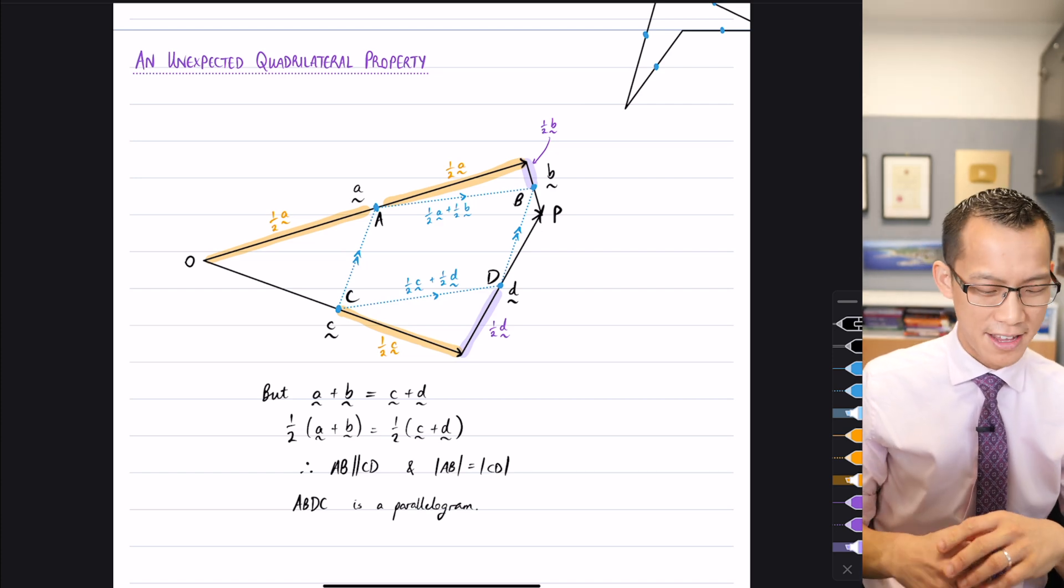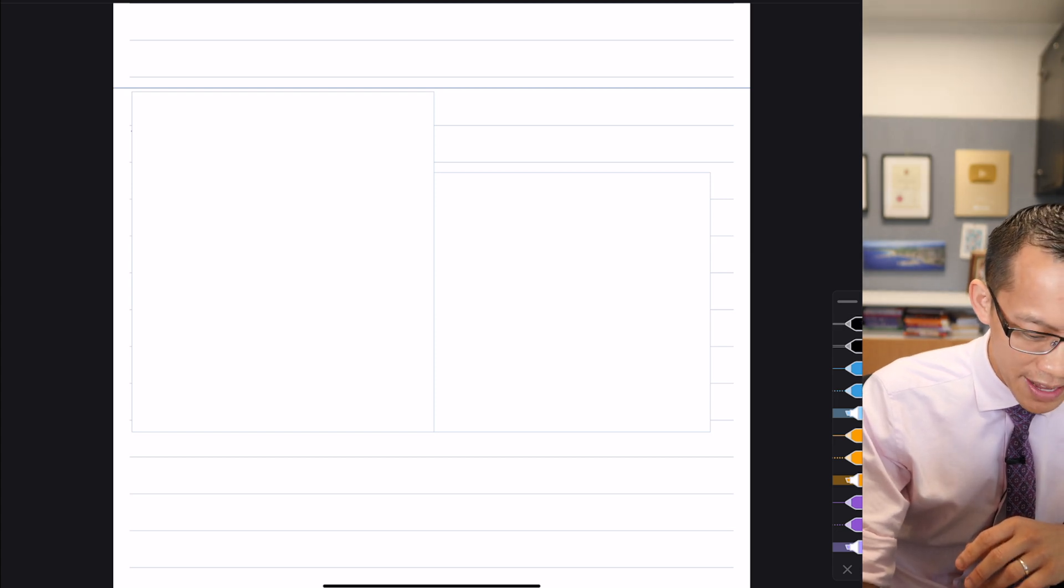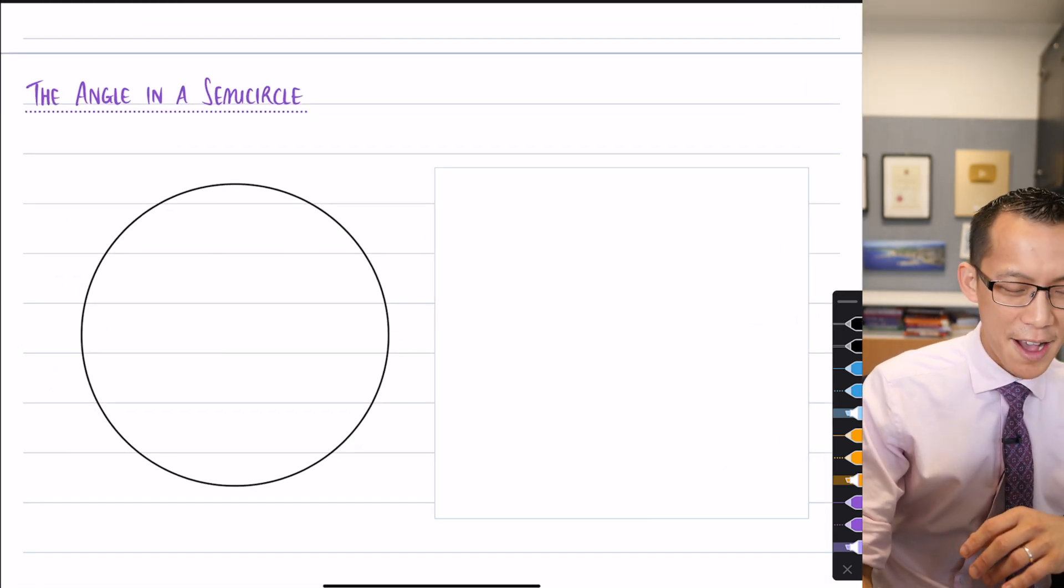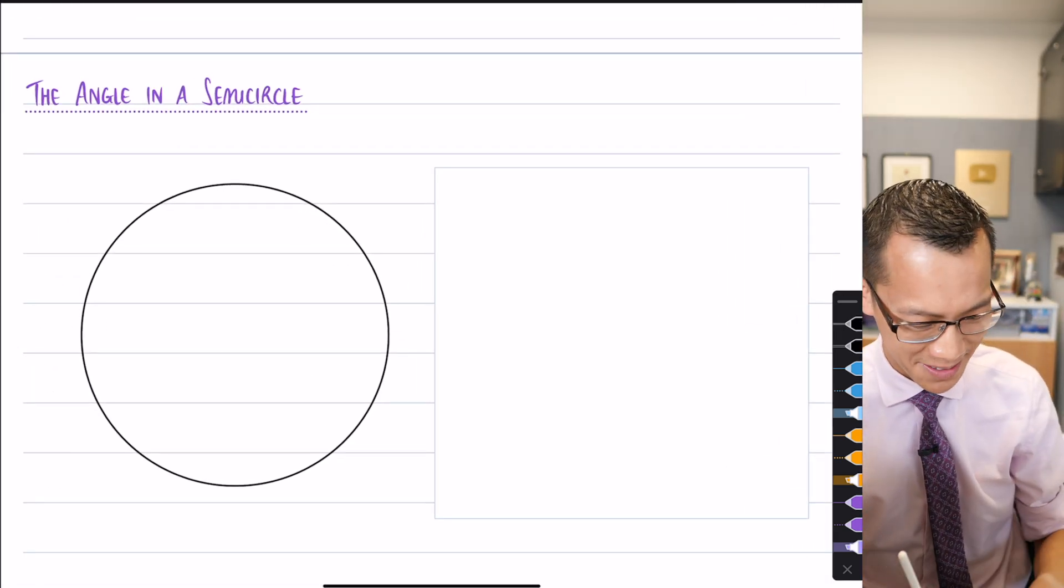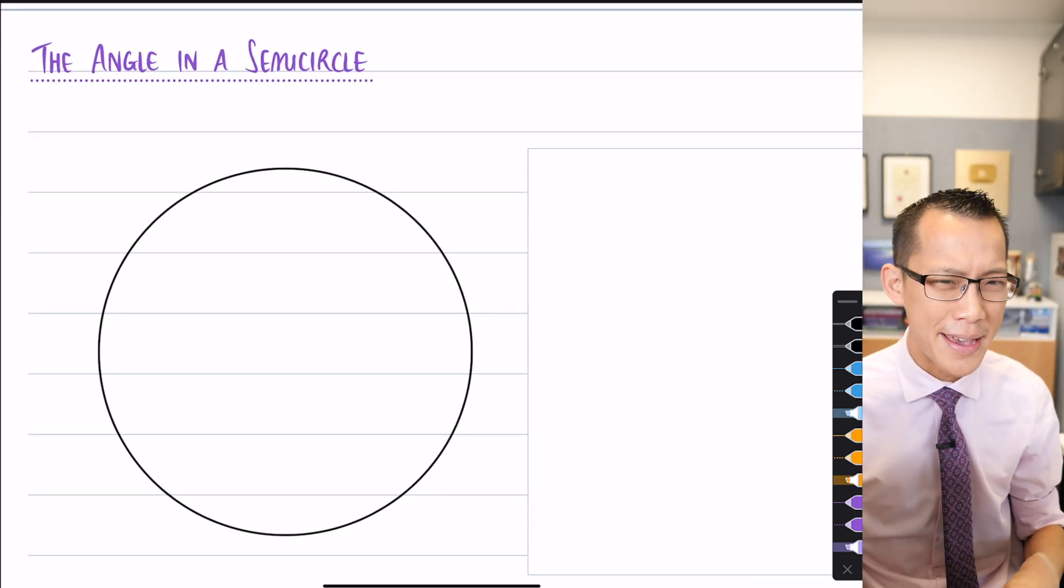This next one, I'm going to give you a few minutes to think about this one. It's funny because it's a property that, I know this is going to sound strange, but I've become a little obsessed with it over the last couple of months. When I say the angle in a semicircle, do you recognize this property? Do you know what this means?